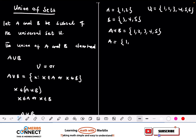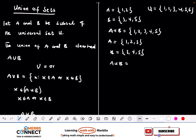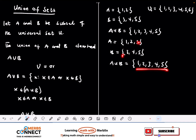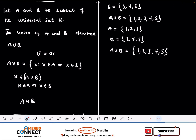Now let's assume A = {1, 2, 3} and B = {3, 4, 5}, where one element is repeating. A union B is still {1, 2, 3, 4, 5}. If an element appears in both sets, we write it only once. The important takeaway is that union goes with 'or'.